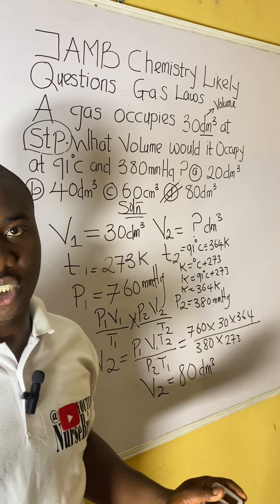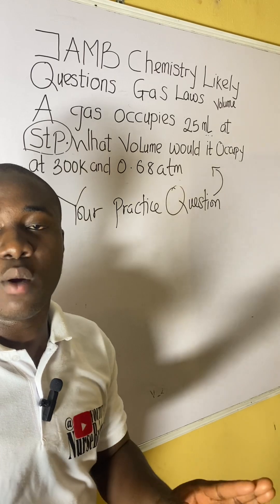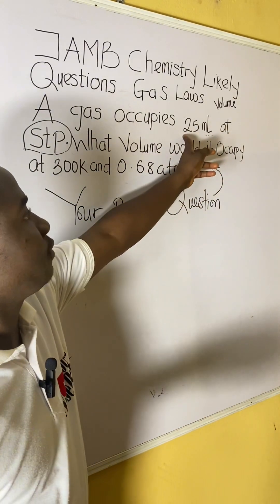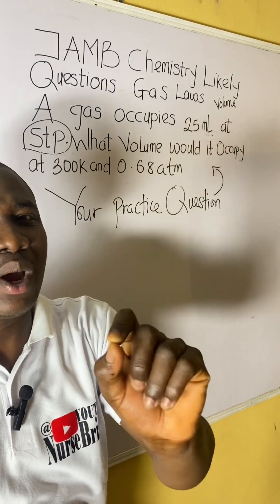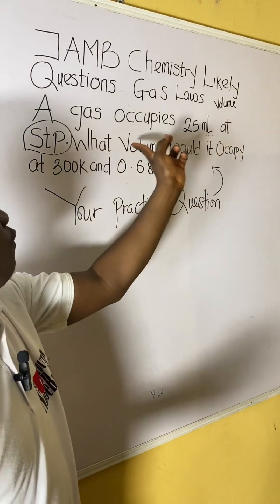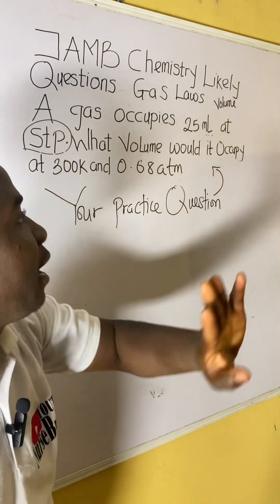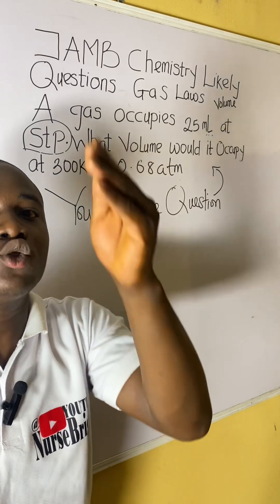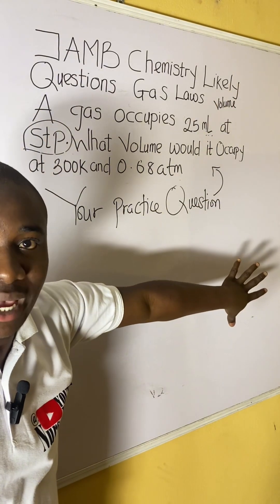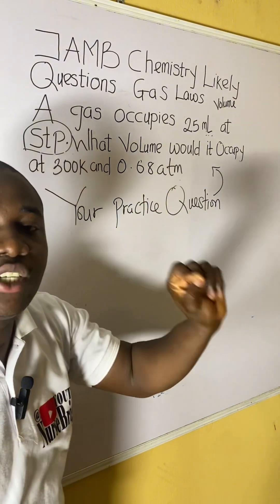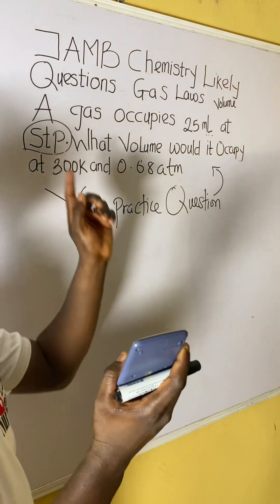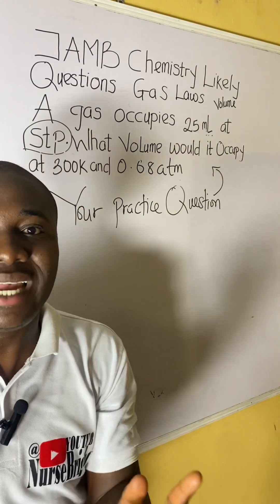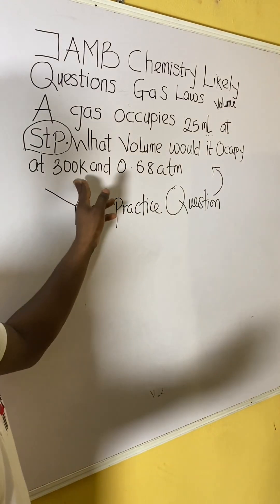Now here is your own practice question — solve it and provide the answer in the comment section. I have altered some parameters from the worked example. Note that the first volume unit has been changed to mL (milliliters), so your answer must also be in mL. Also, the pressure is now expressed in atm, so your standard pressure must be in atm, which is 1 atm — not 760 mmHg.